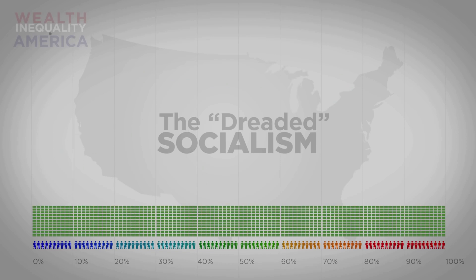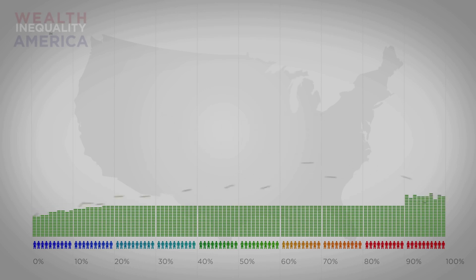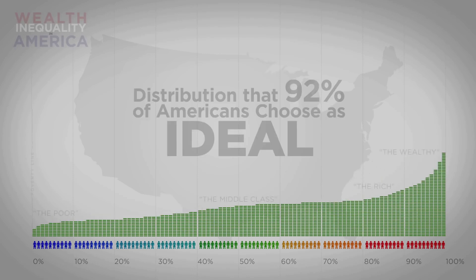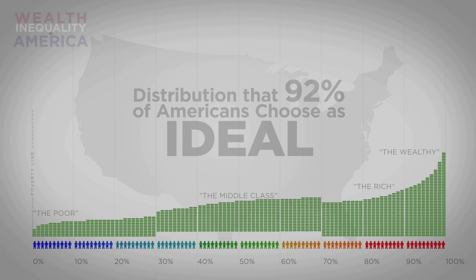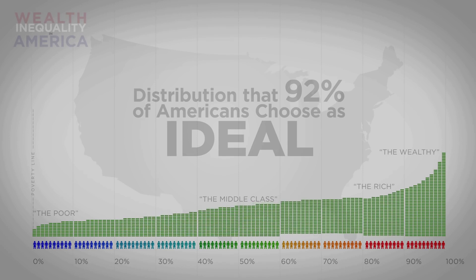Here's socialism — all the wealth of the country distributed equally. We all know that won't work. We need to encourage people to work hard to achieve the American dream. So here's that ideal we asked everyone about — something like this curve. The wealthiest folks are about 10 to 20 times better off than the poorest Americans, even the poor aren't actually poor since the poverty line stays almost entirely off the chart, and we have a super healthy middle class. Republicans and Democrats alike — 92% — said this was a nice, ideal distribution of America's wealth.